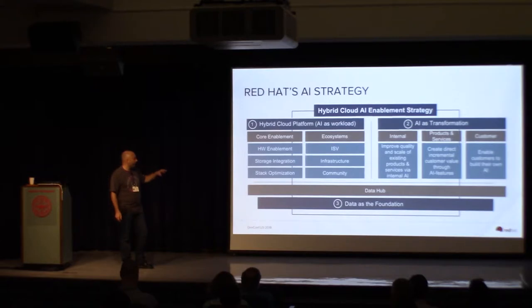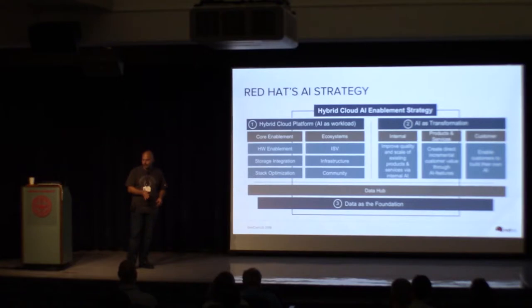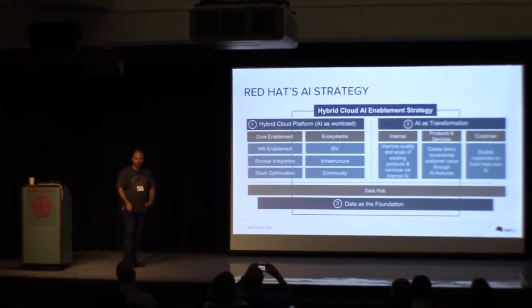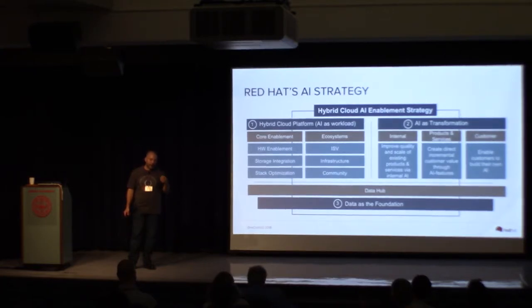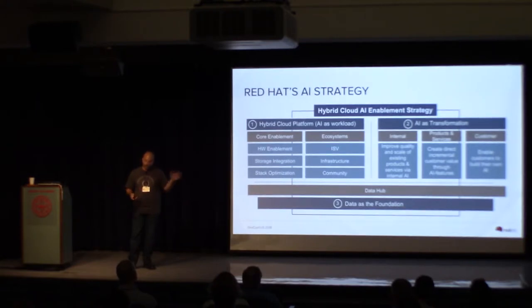AI is an interesting topic because it's very hardware-bound. Suddenly, hardware performance matters again. In the cloud, everything was about scale, and individual system vertical performance wasn't the key differentiator. Now it becomes a key differentiator again, which is great for us because we have this hardware enablement capability end to end. There is a lot of work to integrate because AI rides on the shoulders of cloud, microservices, and containers.